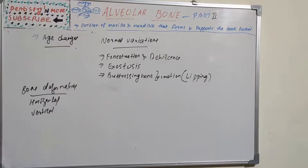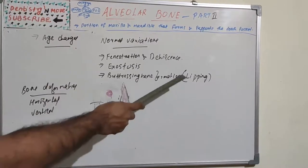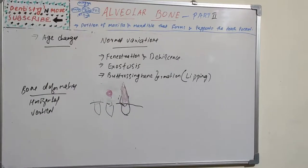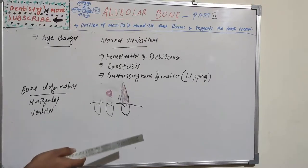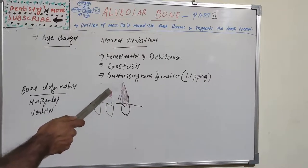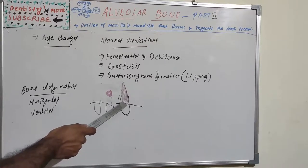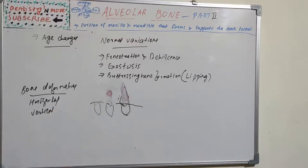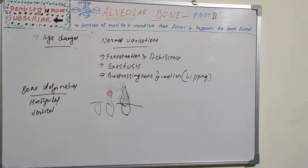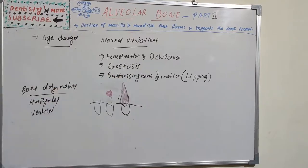Variations in normal bone include fenestration, dehiscence, exostosis, and buttressing bone formation (also known as lipping). Fenestration and dehiscence involve removal of bone from the facial surface. Fenestration is an isolated loss of bone, while dehiscence is a complete loss of facial bone. Anterior teeth are more frequently involved and the condition is often bilateral, sometimes due to malposition, root prominence, or labial protrusion. Etiology could be excessive occlusal force. Fenestration and dehiscence can be asked as a short note.